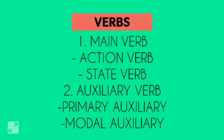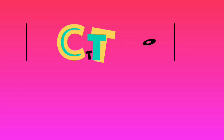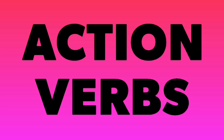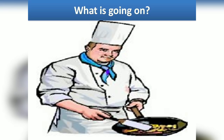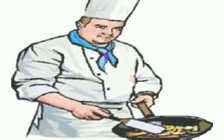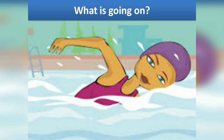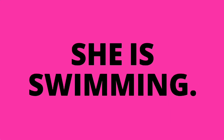Let us discuss about the main verb. First, action verb. To know more about the action verbs, let us see the pictures. Here we can see the variety of actions of the subject. Look at this picture — what is he doing? He is cooking. Cooking is the action performed by the subject. Here the subject is 'he.' See the action here — she is swimming. Swimming is the action verb.